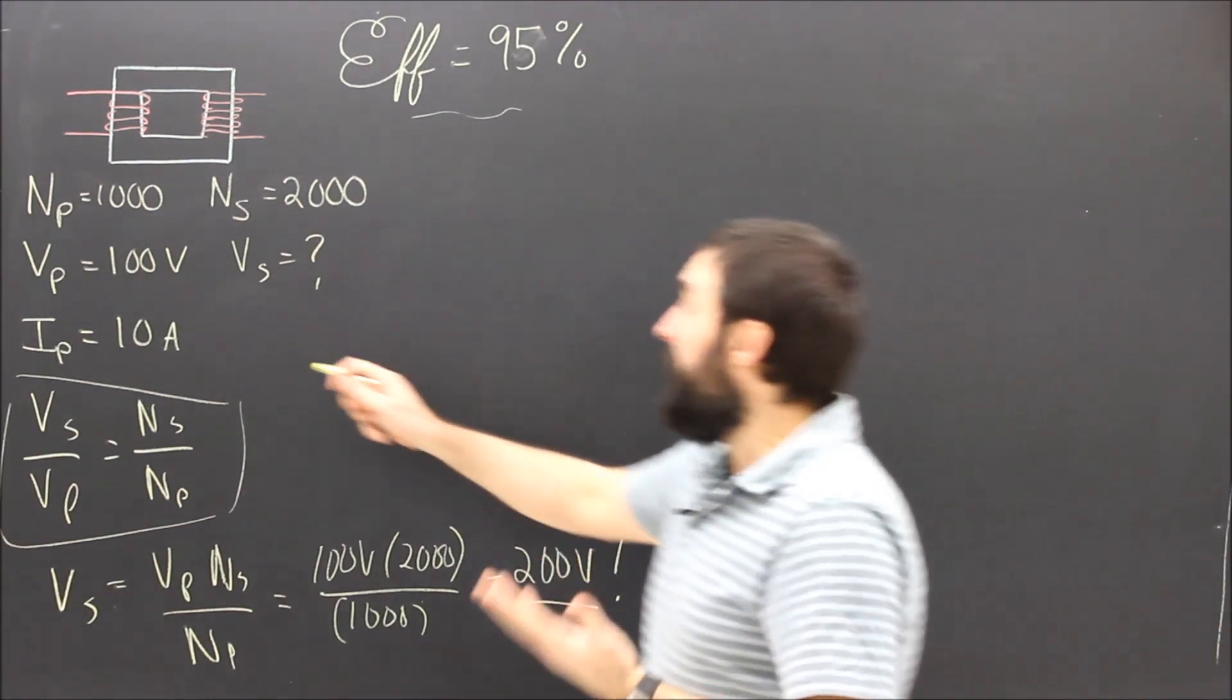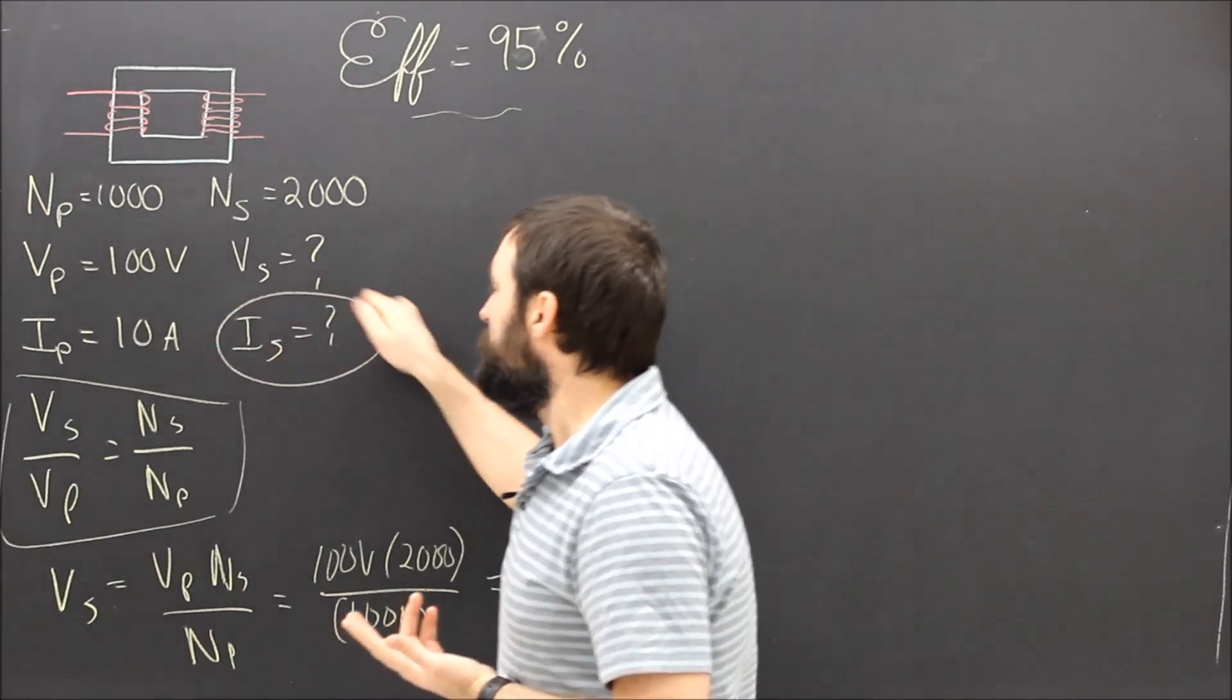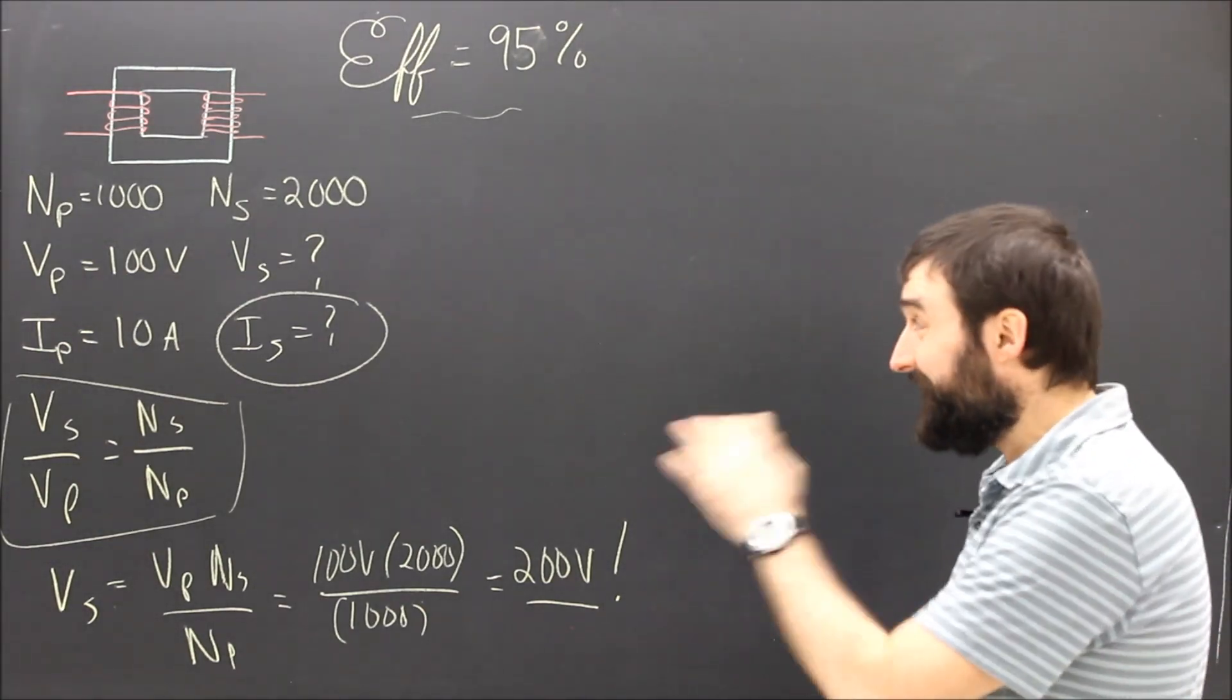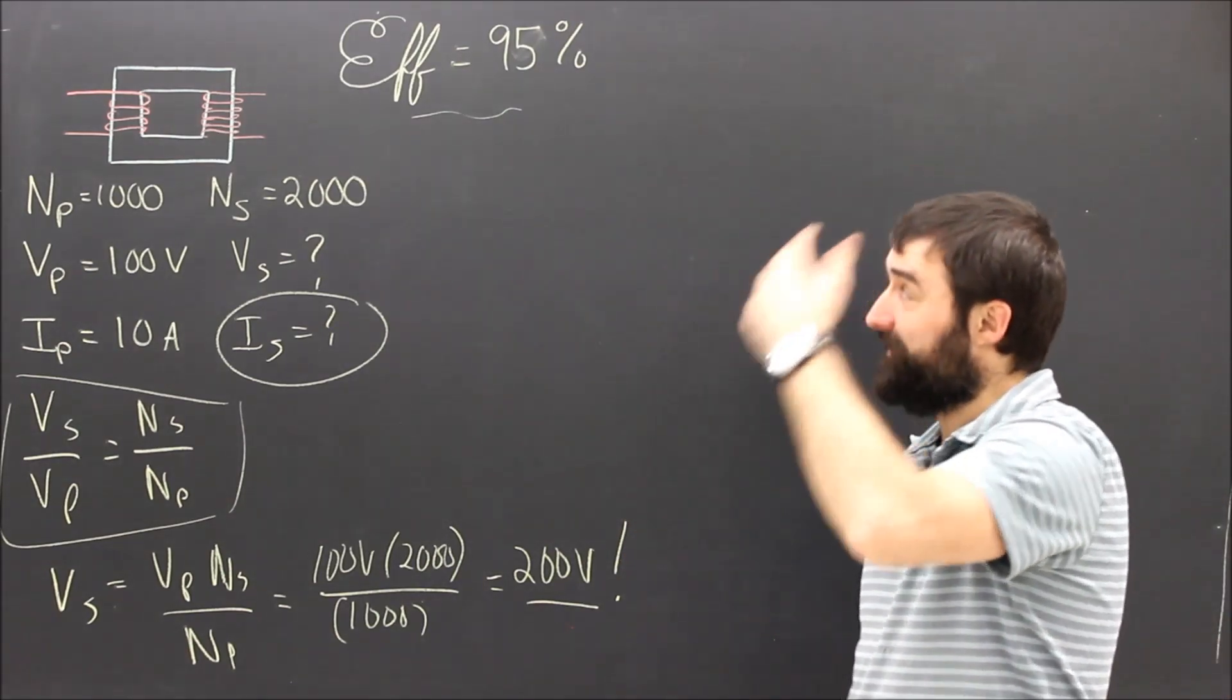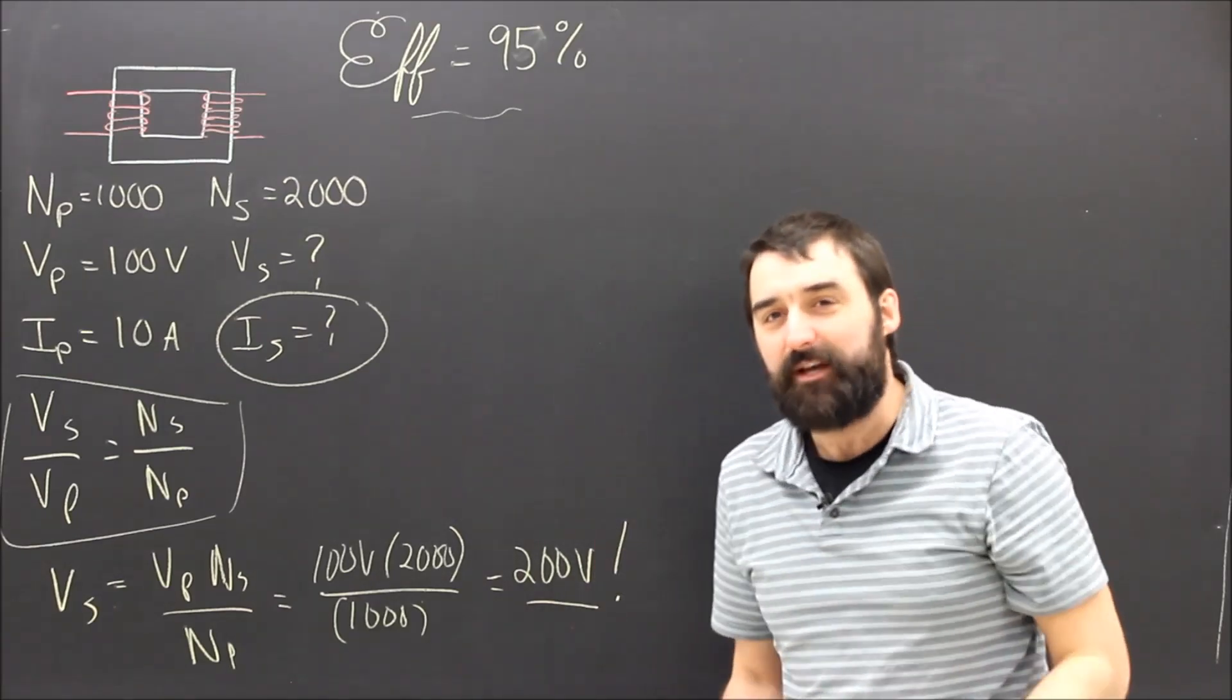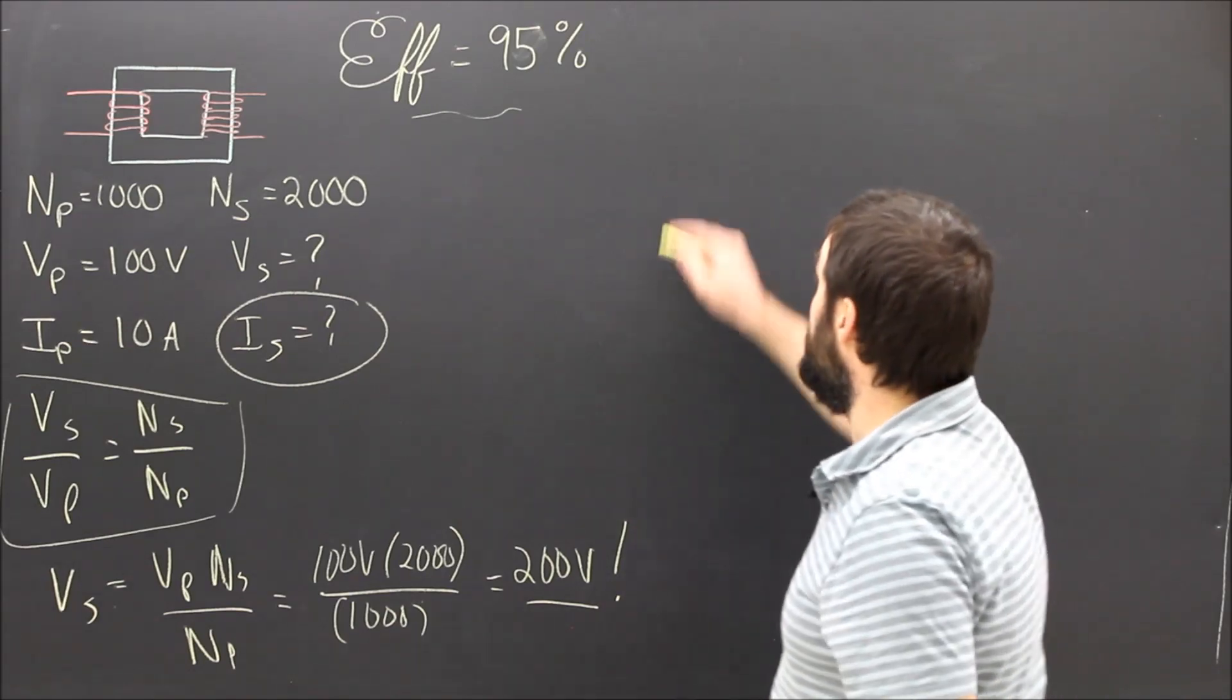What else, though? How much current is actually going to come out? Think of this as part B. What's the secondary current going to be coming out of this? Again, if you've done enough practice, you can do in your head, hopefully, pretty fast what it should have been in the first place. If this was an efficient transformer, 100%, how much current would come out. But we can't use that formula because it was only for 100% efficiency. So let's go back a bit.